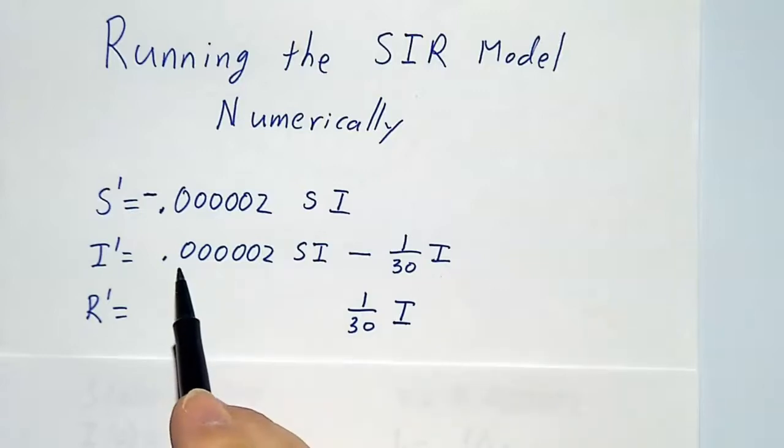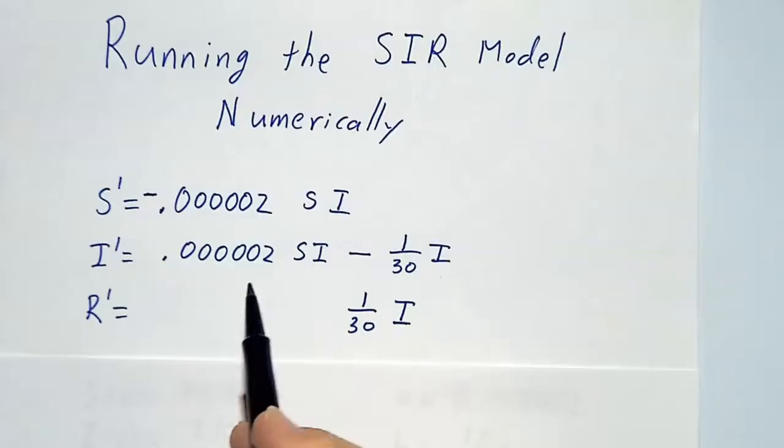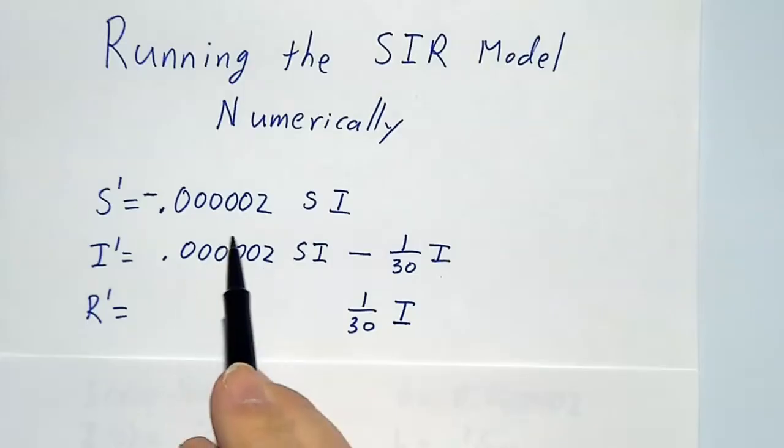And the transmission coefficient is 0.00002, which sounds pretty small. What it means is that every customer each day will convince two out of every million potentials to start using the product.